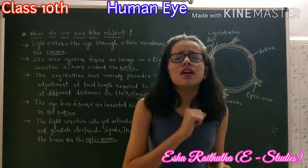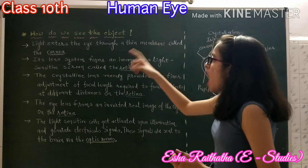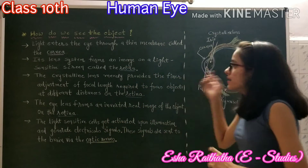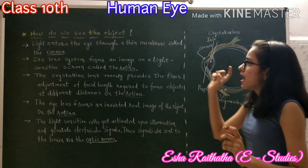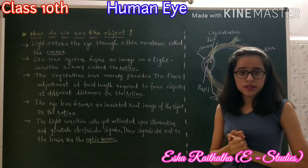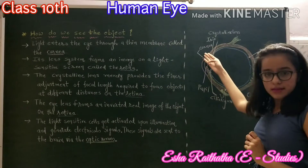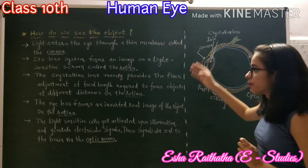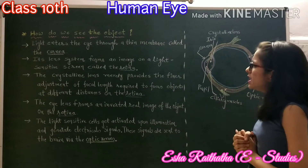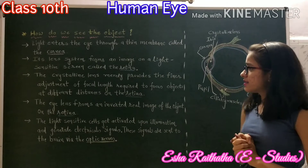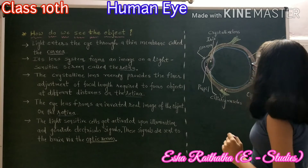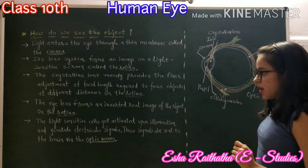Now, how do we see objects? Light enters the eye through a thin membrane called the cornea, as you can see here. Its lens system forms an image on a light-sensitive screen called the retina, which you can also see here.